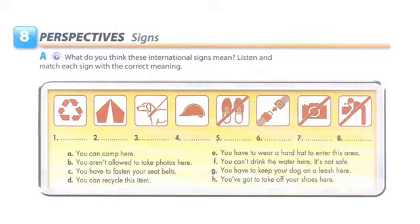A: You can camp here. B: You aren't allowed to take photos here. C: You have to fasten your seatbelts. D: You can recycle this item. E: You have to wear a hard hat to enter this area. F: You can't drink the water here — it's not safe. G: You have to keep your dog on a leash here. H: You have to take off your shoes here.